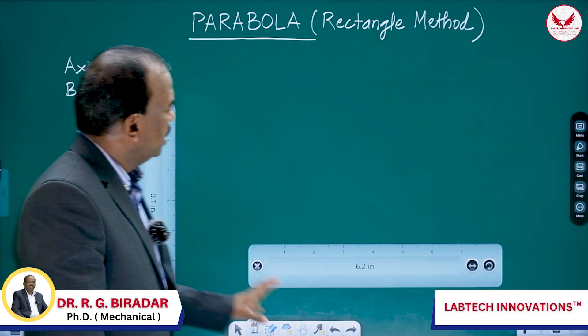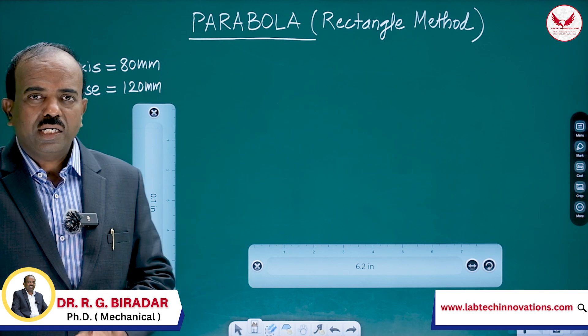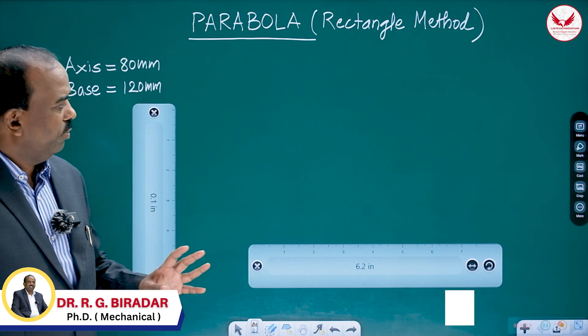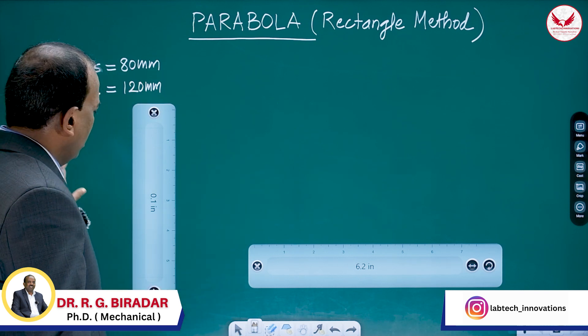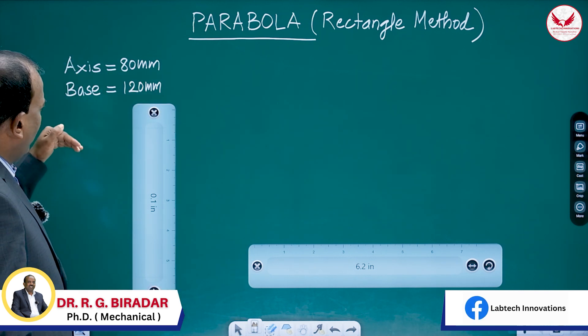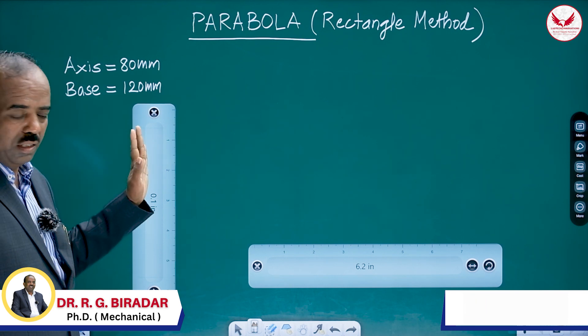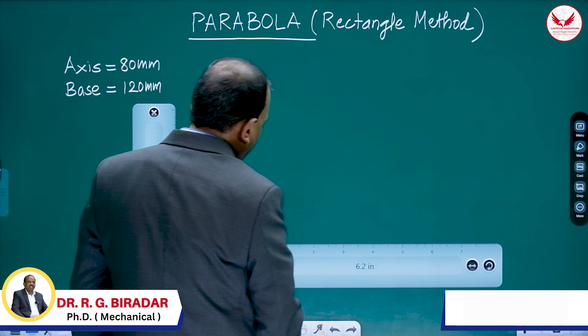Hello students, today we will see one of the most simple curves, that is parabola by rectangle method. Specially during the exam, it is going to be one of the easiest curve. For that, what information we will be having? Base here we have taken 120 and axis 80. Once we are having this information, then how to solve this example? Please see it.